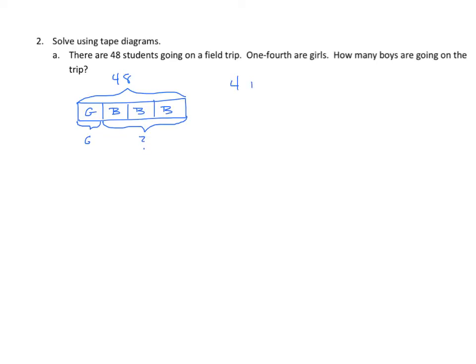Well, we know that four units equals 48. We want to find one unit equals 48 divided by 4 equals 12. So each one of these units is 12. Well, we want to know how many boys, and there's one, two,